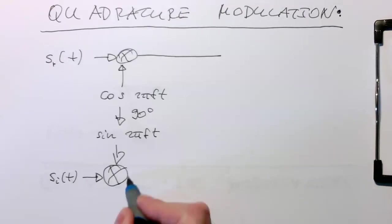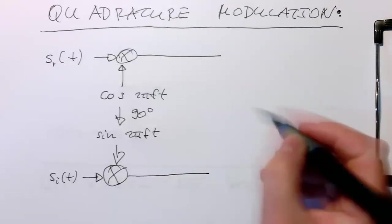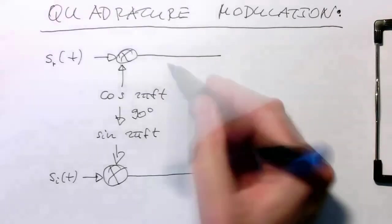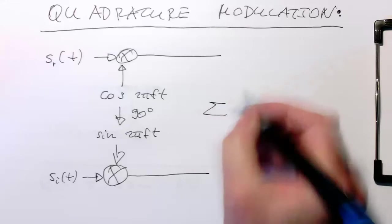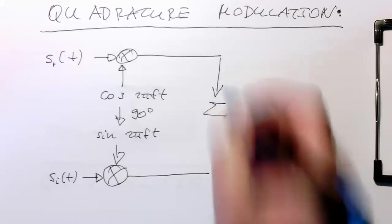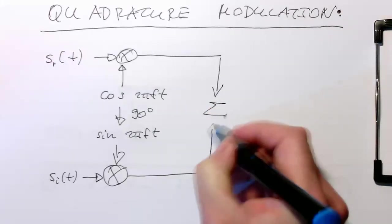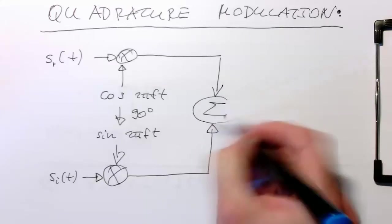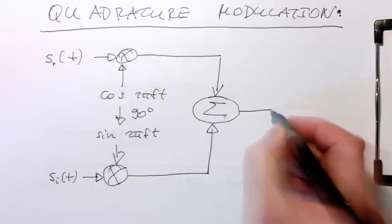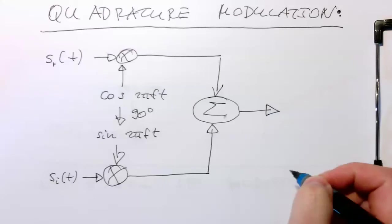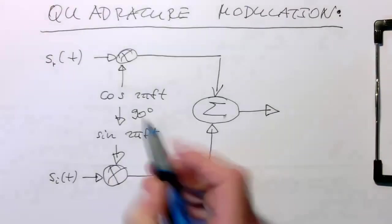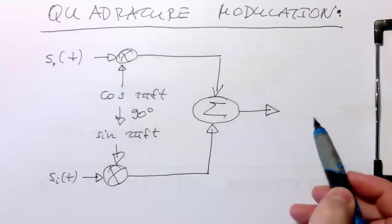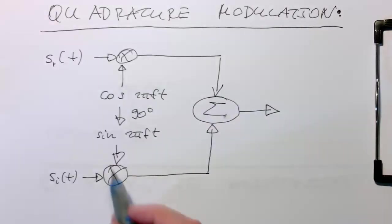So now the interesting thing is because these two output waves have a 90 degree phase shift, we can just add them together. So just a summation unit, and we transmit these ones. So instead of just using a cosine wave and transmitting that, we're also using a sine wave and transmitting that.